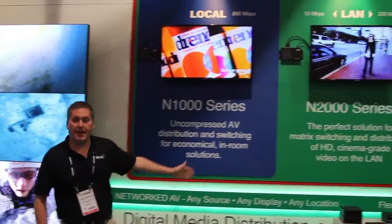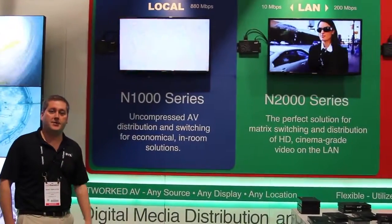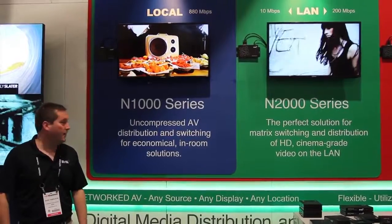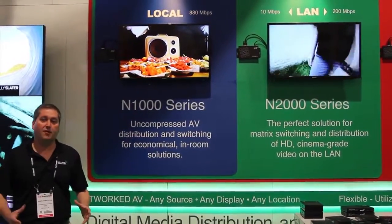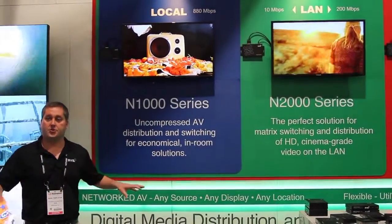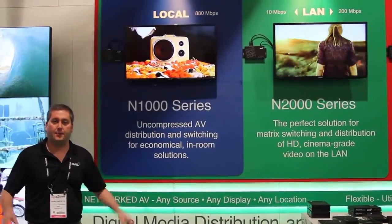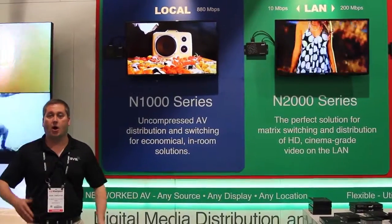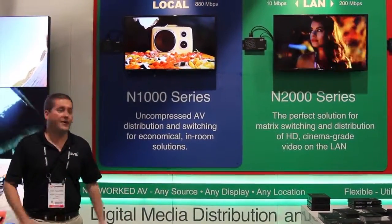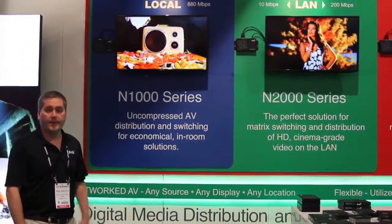The N2000 is our JPEG 2000 compressed family of products, ideal for LAN-based deployments or distributed matrix applications on a corporate LAN or on a private AV LAN.